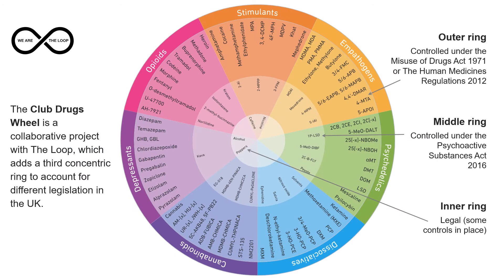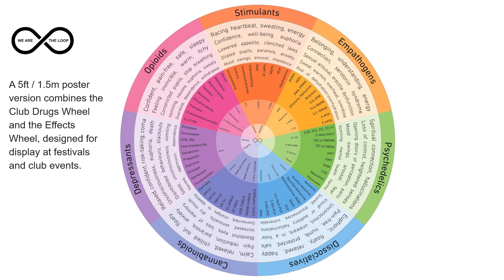In collaboration with the Loop Harm Reduction Service, the Club Drugs Wheel is designed for display at festivals and nightclubs. One version adds a third concentric ring to explain the different drug laws in the UK. Another version combines the Drugs Wheel and the Effects Wheel into a large 1.5-metre poster. All of these are available for free.